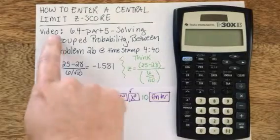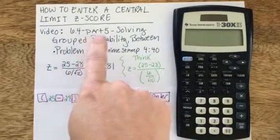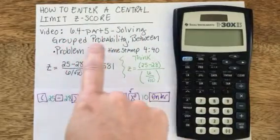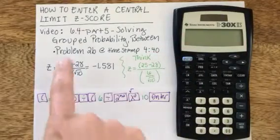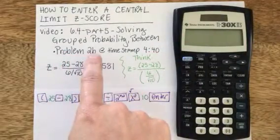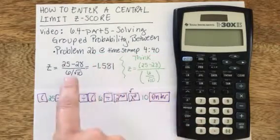I took this particular problem from the video I created, titled 6.4, Part 5, Solving Group Probability Between, meaning the probability of something being between two values. It's problem 2b, and this problem shows up in timestamp 4 minutes and 40 seconds into the video.